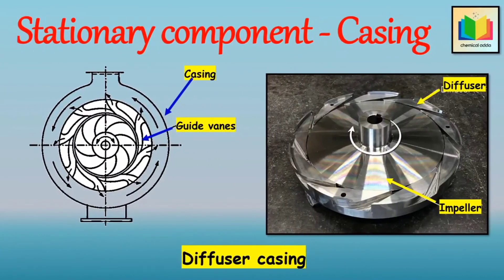The third type of casing is used in diffuser type or turbine pumps. In this type, guide vanes or diffusers are interposed between the casing chamber and the impeller. The impeller is surrounded by a series of guide vanes mounted on a ring called a diffuser ring. The conversion of kinetic energy into pressure energy is more efficient with this type compared to the volute type. There is a gradual change in the direction of fluid, so losses are kept to a minimum, and improved efficiency is obtained over a wider range of capacities. This construction is often used in multi-stage high-head pumps.